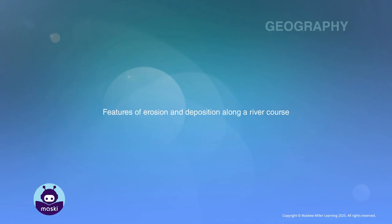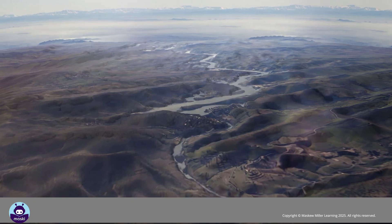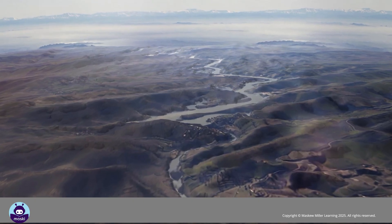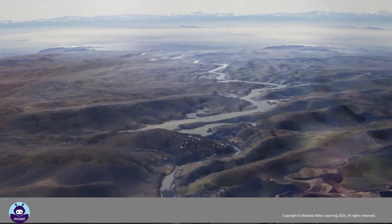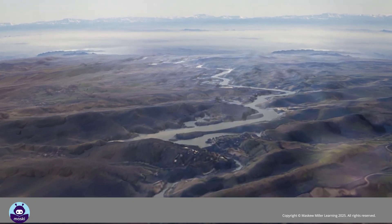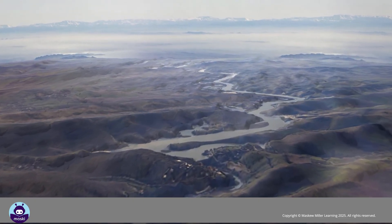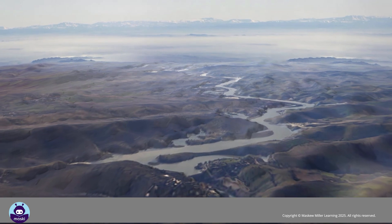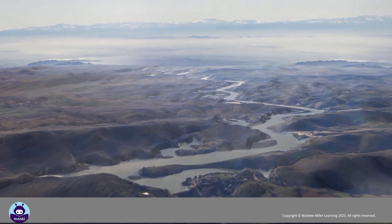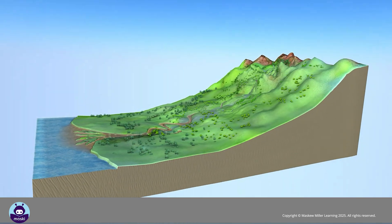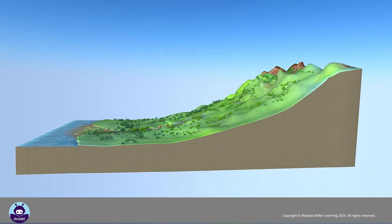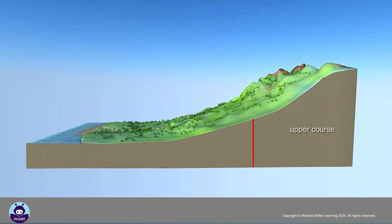Features of erosion and deposition along a river course: rivers are continually eroding, transporting, and depositing. There are three sections of a river: the upper course, middle course, and lower course.